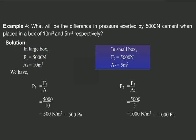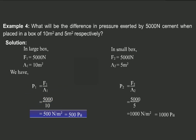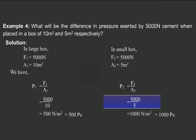Similarly, for the small box, the force exerted, F2, is equal to 5,000 Newton, and the area of the box, A2, is 5 meter square. For the large box, P1 is equal to F1 by A1, which is equal to 5,000 by 10, giving us 500 Newton per meter square, that is 500 Pascal. Similarly, for the small box, P2 is equal to F2 by A2, that gives us 5,000 by 5, or 1,000 Newton per meter square, which is 1,000 Pascal.